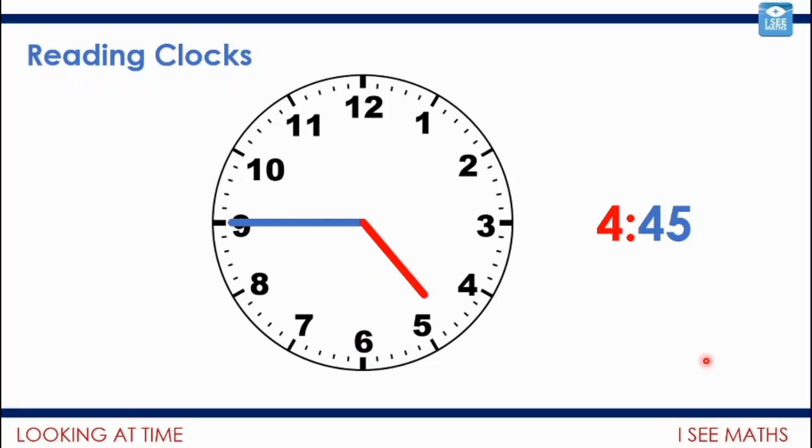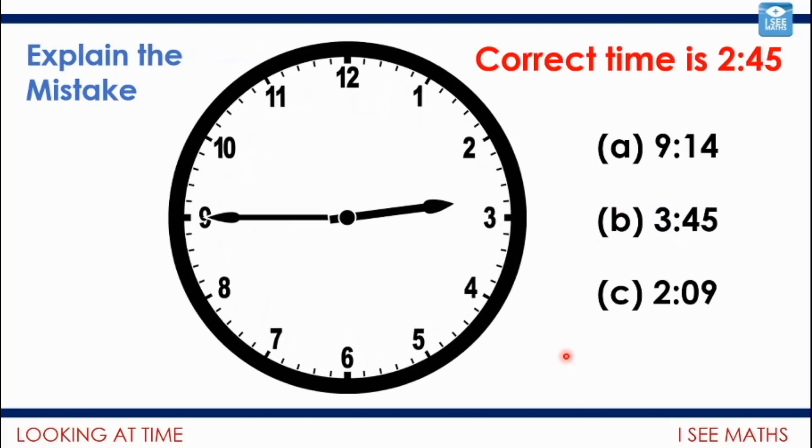The hour hand is now halfway between four and five because it's half past four. Then when we get to 4:45 or quarter to five, the hour hand now is nearly at the five. It's not 5:45, it's still 4:45 because it's before five. It's between four and five. But so it's 4:45 still.